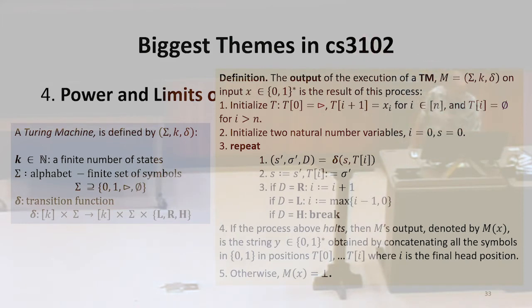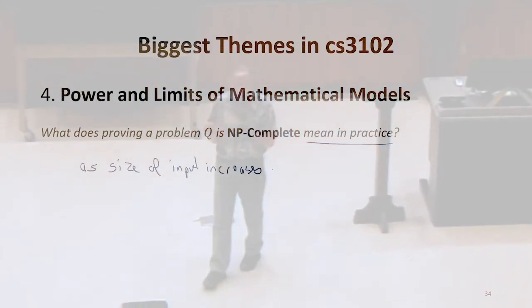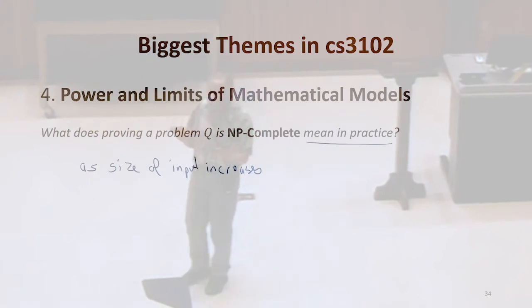So with that setup, what does it actually mean in practice? What can we say about a problem once we've done this theoretical proof that it's NP-complete? So the size of the input that we want to evaluate Q on increases. What can we say?